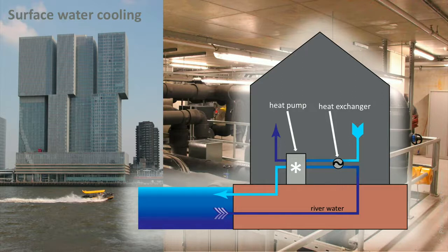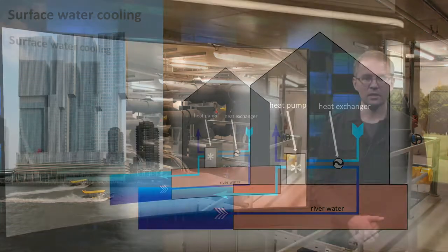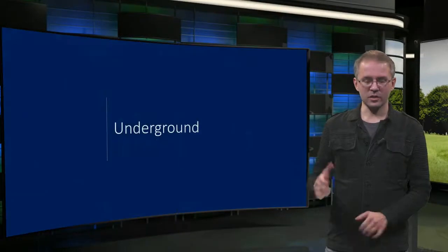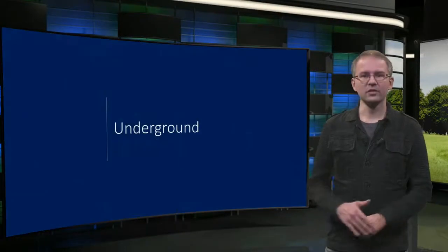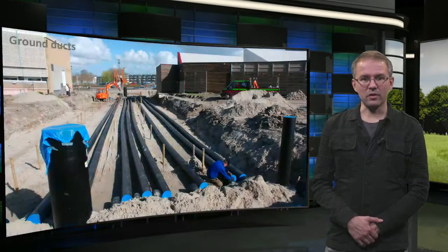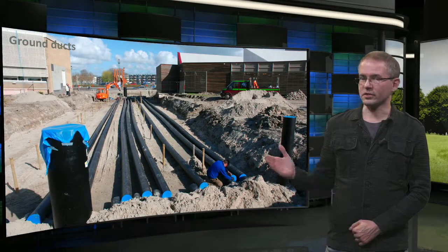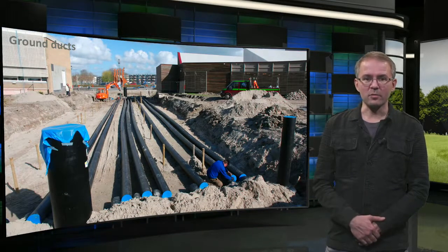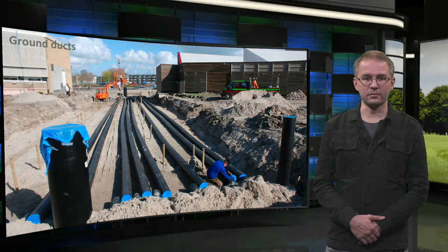For lakes, rivers, and seas, water temperature fluctuates in summer and winter, so combining these with seasonal thermal storage makes them a lot more useful. The last source is below us: the underground. In Eric's lecture you saw ground duct ventilation, which is a simple example of using the soil for preconditioning ventilation air.